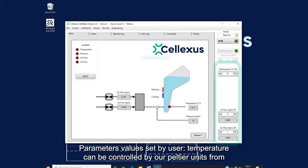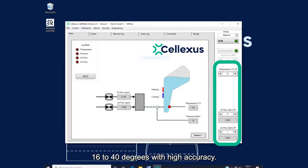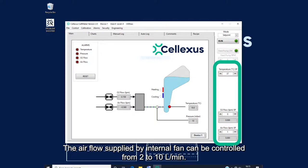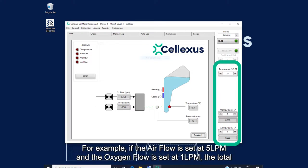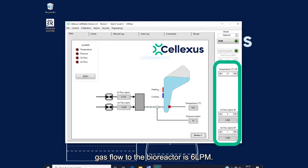Parameter values set by user. This is where temperature can be controlled by our Peltier units from 16 to 40 degrees with high accuracy. The airflow supplied by the internal fan can be controlled from 2 to 10 litres per minute, and the auxiliary gas line much the same. So for example, if the airflow is set at 5 litres per minute, and the oxygen flow is set at 1 litre per minute, the total gas flow to the bioreactor is 6 litres per minute.